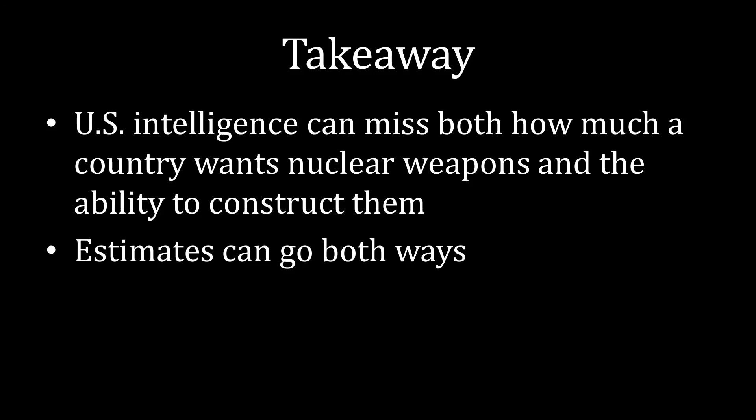Summing up, US intelligence can miss both how much a country wants a nuclear weapon and what that country's ability is to construct them. And those estimates can go either way — sometimes the United States underestimates a country, and sometimes the United States overestimates a country. The remaining question is how this affects nuclear negotiations, and the answer to that is in the next lecture. I hope you enjoyed this one, and I hope to see you next time. Take care.